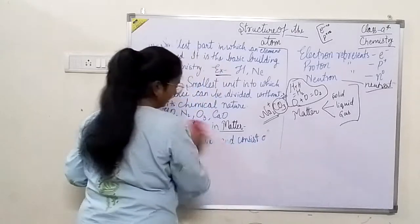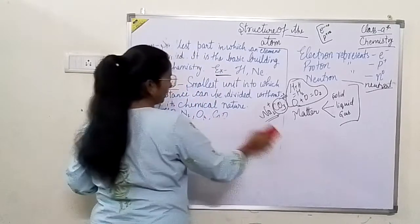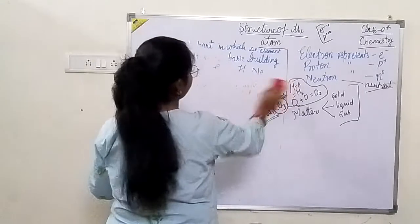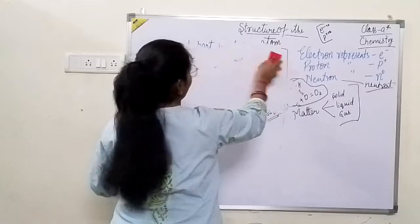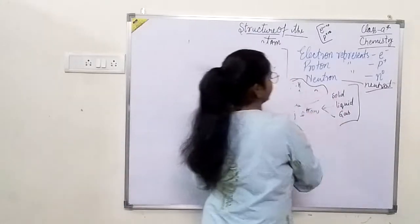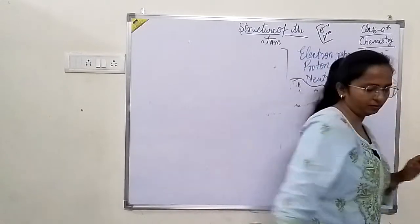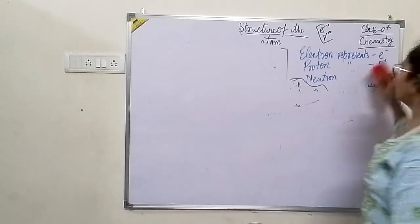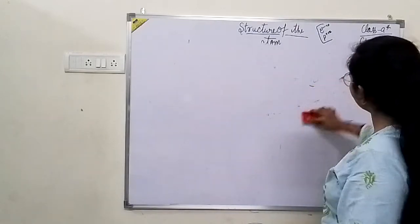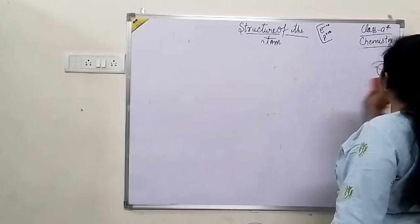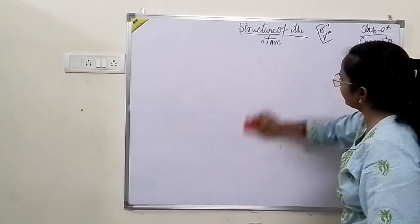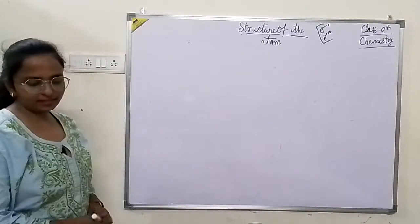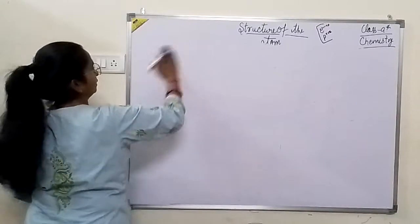अब हम बात करते हैं कि जो हमारे Electron के discoverers हैं, उन्होंने क्या किया है। उन्होंने कुछ models दिये हैं। उन models के बारे में हम discuss करेंगे। सबसे पहला model हमारे Thomson ने दिया है, जिसे उन्होंने Christmas pudding से compare किया। अब हम Structure of the Atom की बात करते हैं।